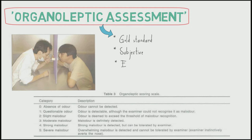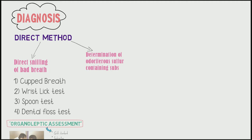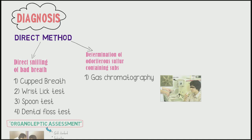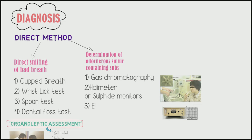Organoleptic assessment is easy to perform but has poor objectivity and reproducibility. Another subcategory is gas chromatography for determining odoriferous sulfur-containing compounds, performed with an apparatus equipped with a flame photometric detector. It is considered the gold standard for quantitatively analyzing volatile sulfur compound concentrations. Other tools include the halimeter or sulfide monitors, the electronic nose, and tongue sulfide probes.